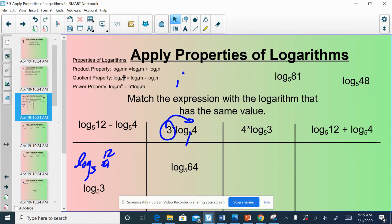Same idea here. The exponent would be 3 to the fourth. 3 to the fourth is 81. And this one here, remember when you are adding, you can condense it under multiplication. So, that would be log base 5 of 48, and then we can match them.